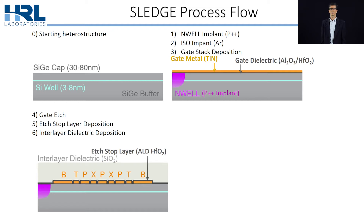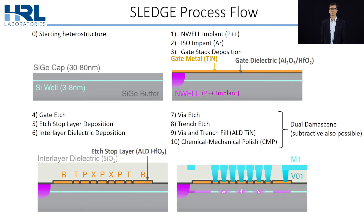After that, we deposit an etch-stop layer of hafnium oxide, which will be used later, and then a thicker interlayer dielectric of silicon oxide. Finally, we complete a dual damascene back end. In the interlayer dielectric, we etch vias, then trenches. Then we use ALD titanium nitride to fill these, and finally a chemical mechanical polish to remove titanium nitride on the ILD surface. This isolates trench lines, which we call M1 routing for metal layer 1. We term the vias via 0-1 because they route between M1 and the gate stack.